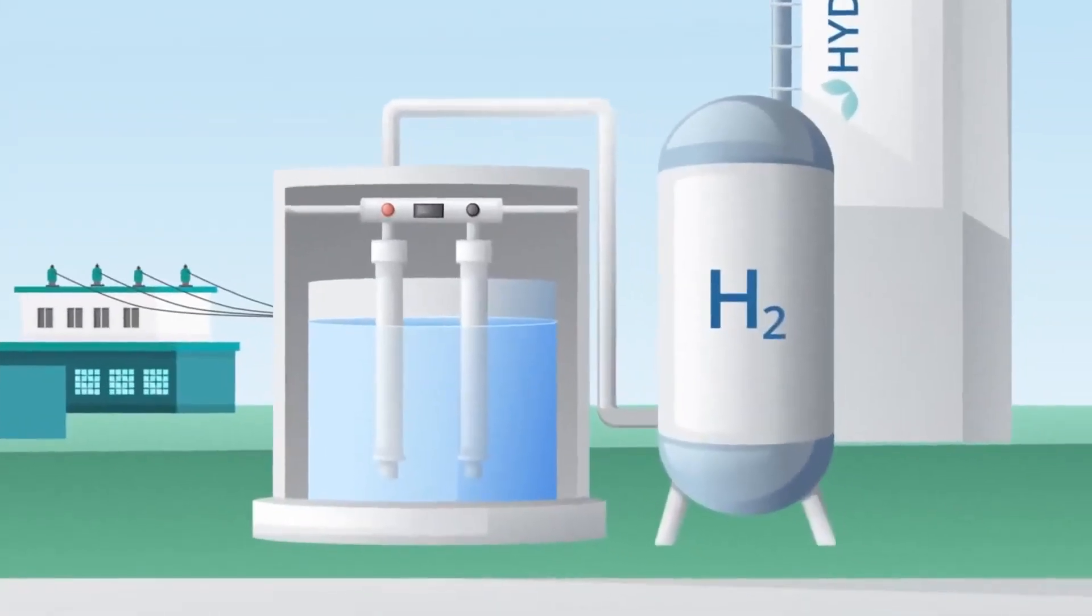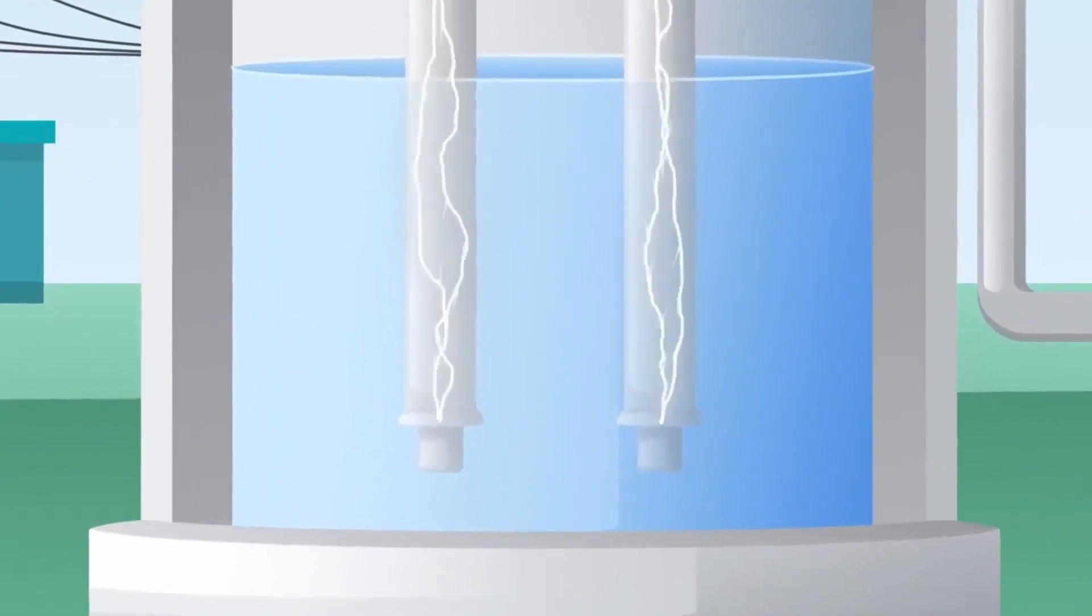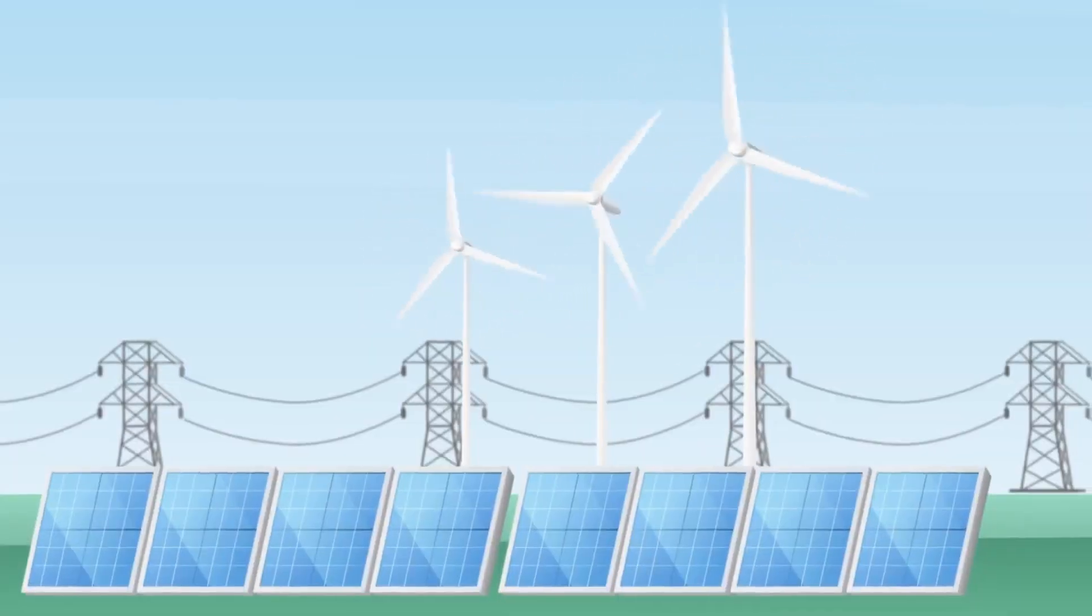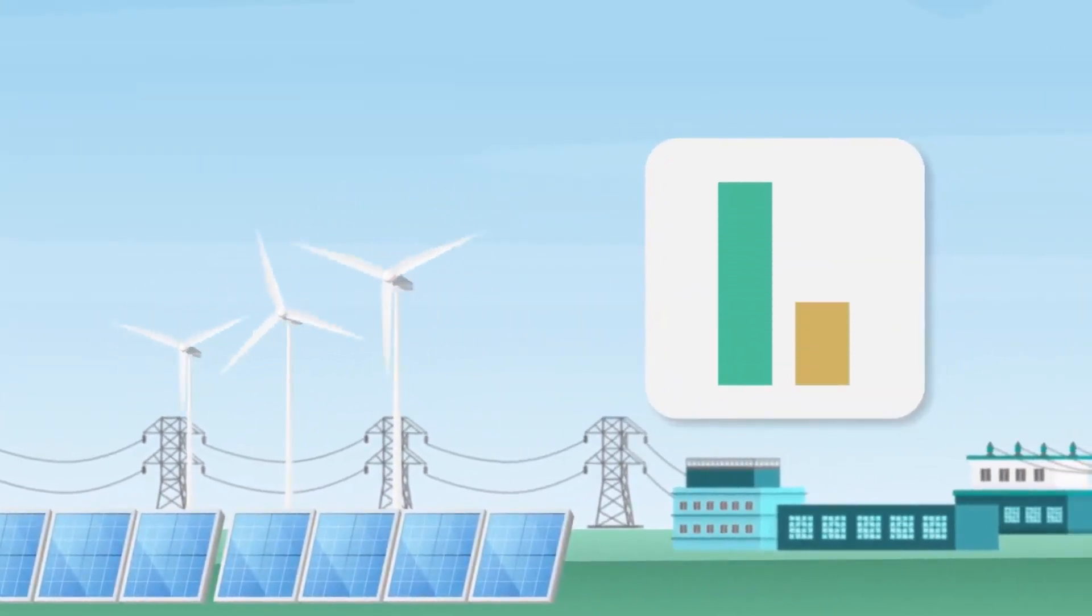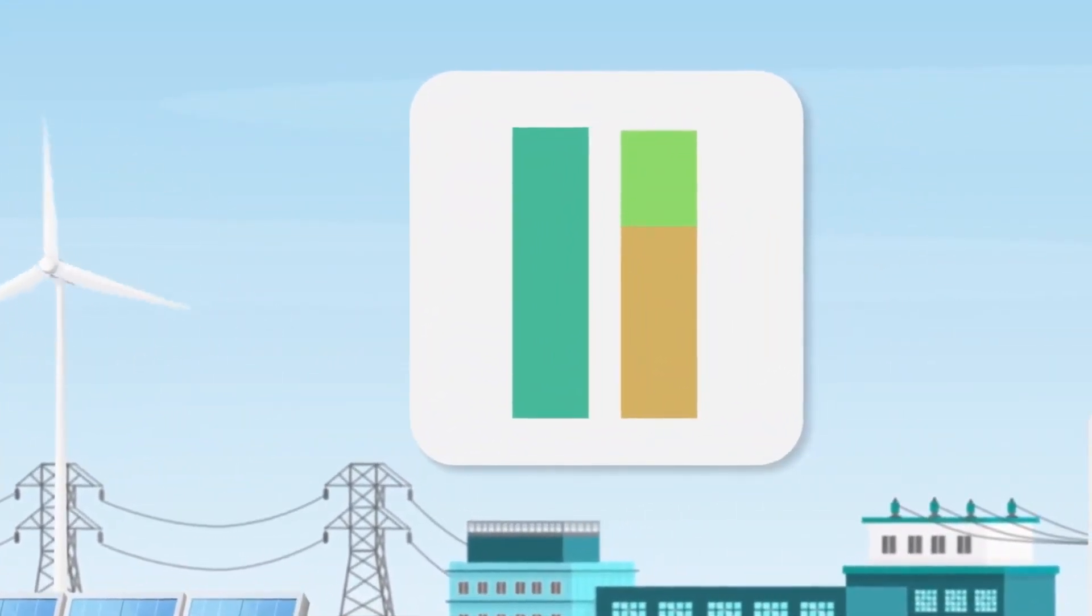To address the high energy consumption of hydrogen production, it is crucial to consider renewable energy sources such as solar or wind power. Utilizing energy from these sources can significantly reduce carbon emissions, making the overall hydrogen production process more environmentally friendly. However, the current methods are still not energy efficient and remain costly.